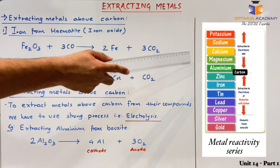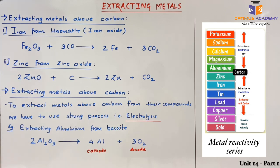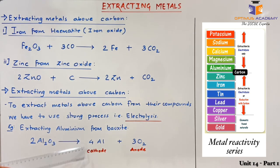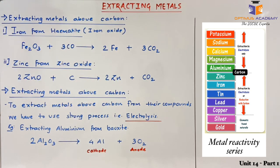For metals which are above carbon in the reactivity series, such as aluminium, we have to use strong processes like electrolysis for their extraction. The ore of aluminium is bauxite, that is Al₂O₃. We carry out electrolysis to separate aluminium from aluminium oxide. During electrolysis, we obtain aluminium at the cathode as it is a positive ion, and oxygen at the anode as it is a negative ion. So metals below carbon in the reactivity series can be reduced using carbon or carbon monoxide, while metals above carbon require electrolysis.